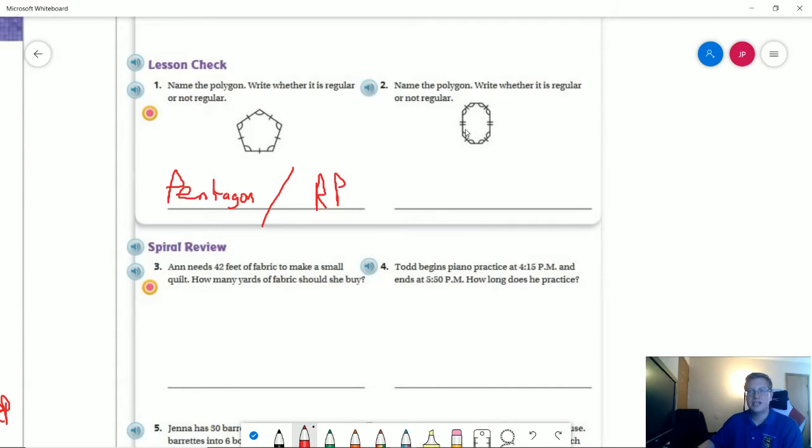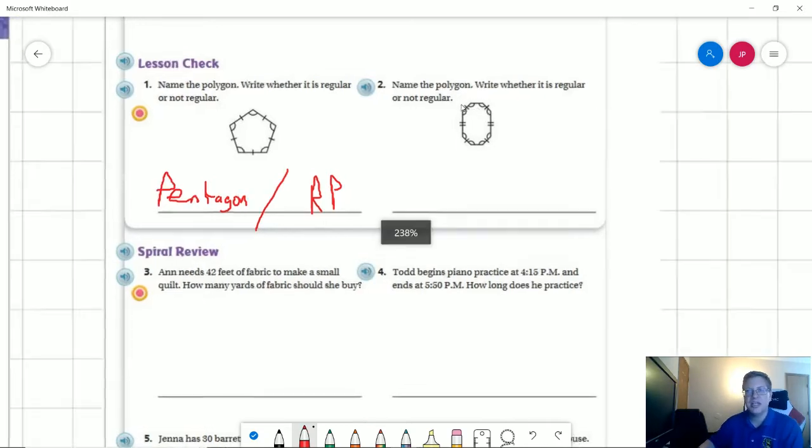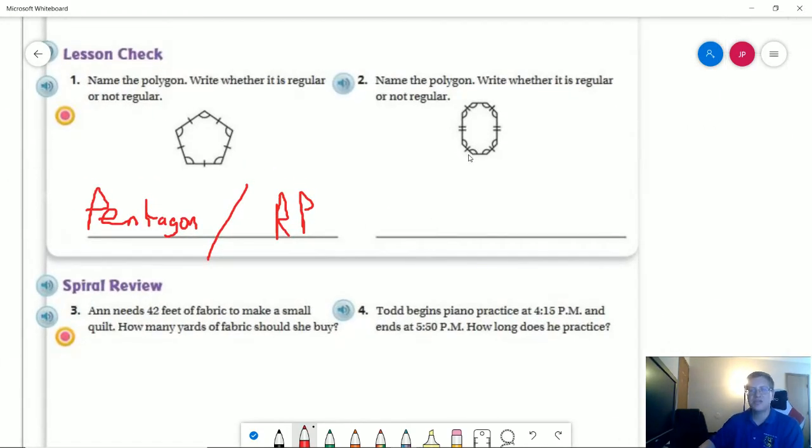For number two, I can already tell you by looking at it that we probably have all of the angles the same measurement, but we have different side lengths, so we do not meet one of the two requirements to have a regular polygon. We do have one, two, three, four, five, six, seven, eight sides, so we have an octagon, and not a regular polygon.